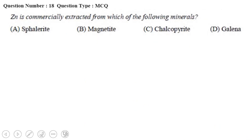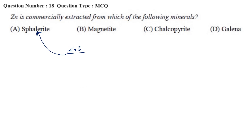Zinc is commercially extracted from which of the following minerals? We know the mineral of zinc is ZnS, and ZnS is called sphalerite. So sphalerite is the ore through which we extract zinc commercially.